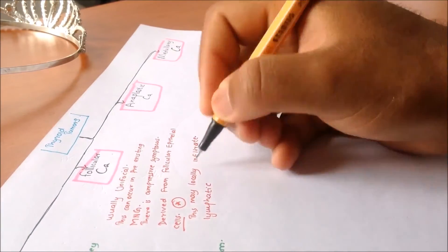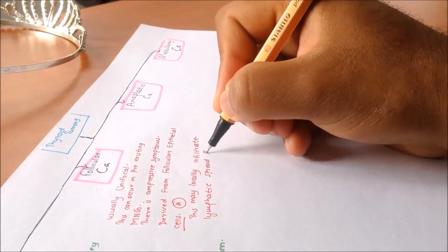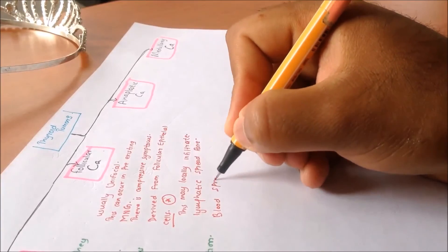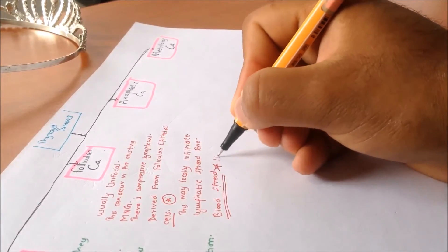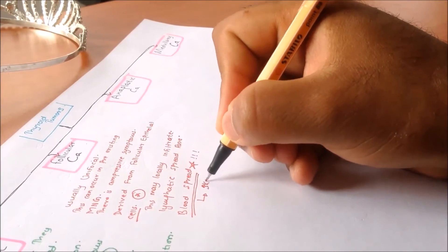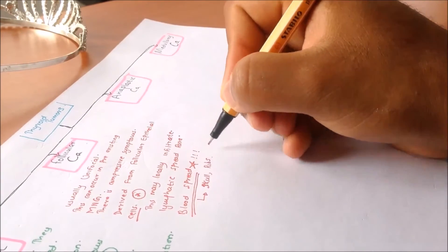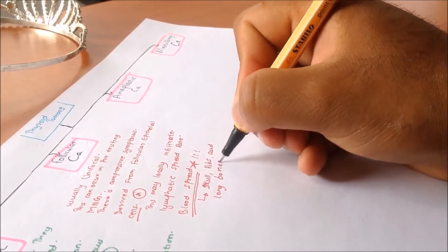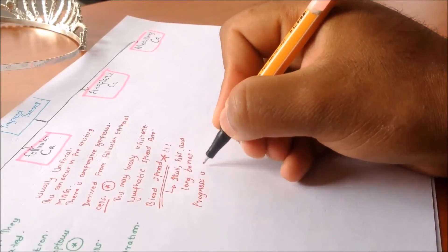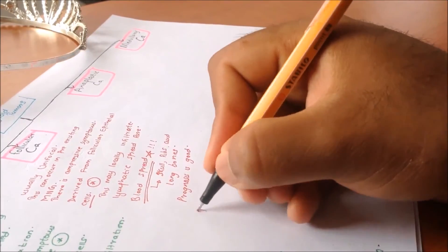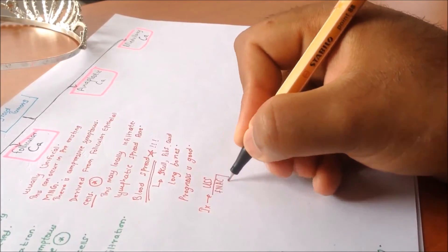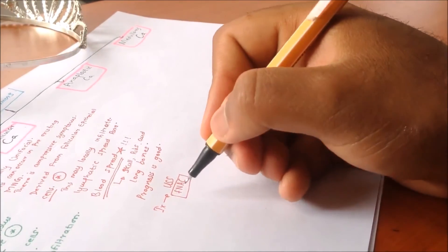The age group is around 40 to 60 years. There is no lymphatic spread, but there is blood spread. You can remember it like this: follicular ends in 'r', and 'r' is for red, and red is blood — so follicular carcinoma spreads through blood, not lymph. Investigations are ultrasound scan and FNAC.